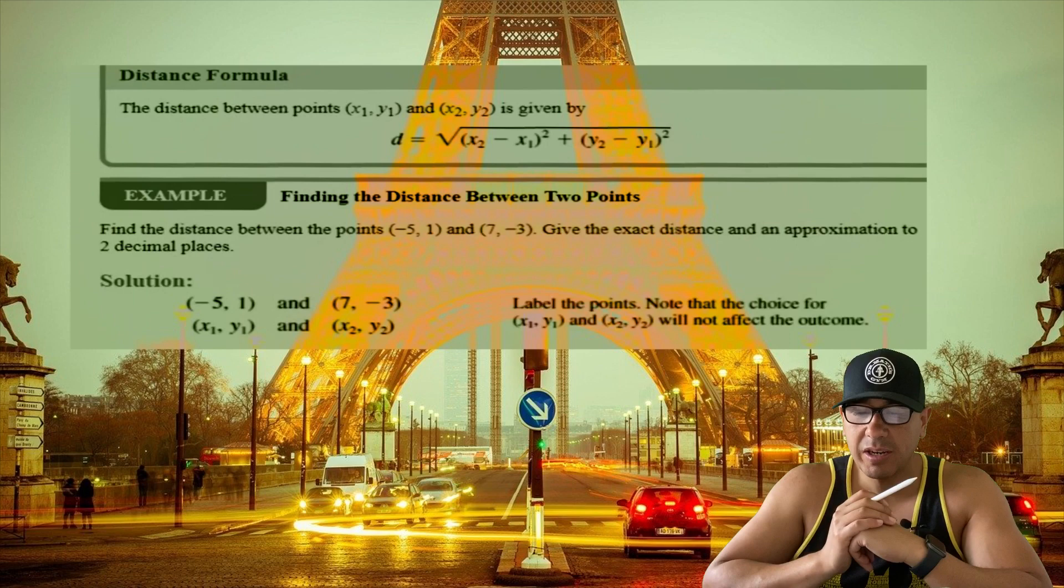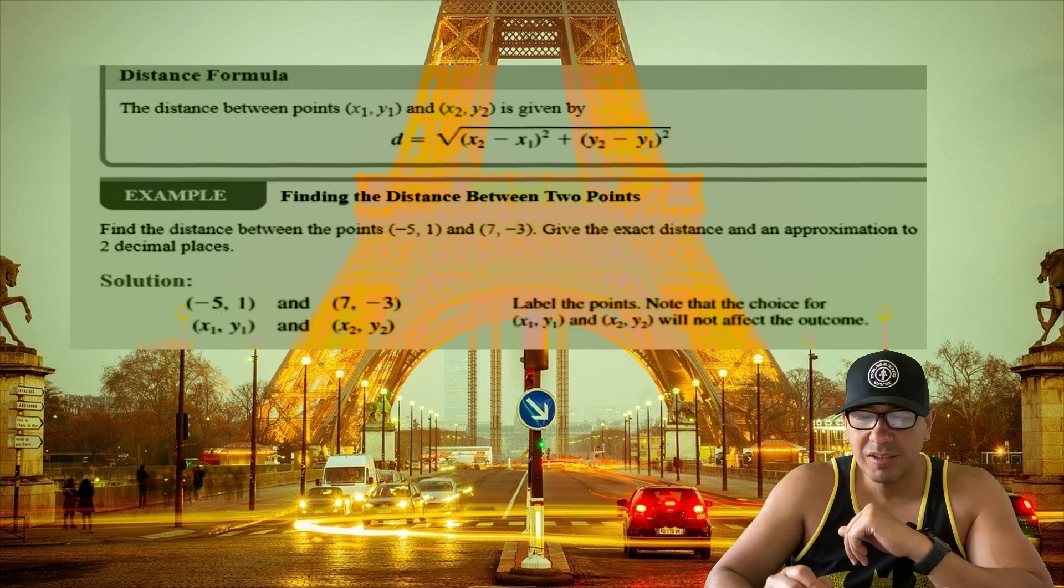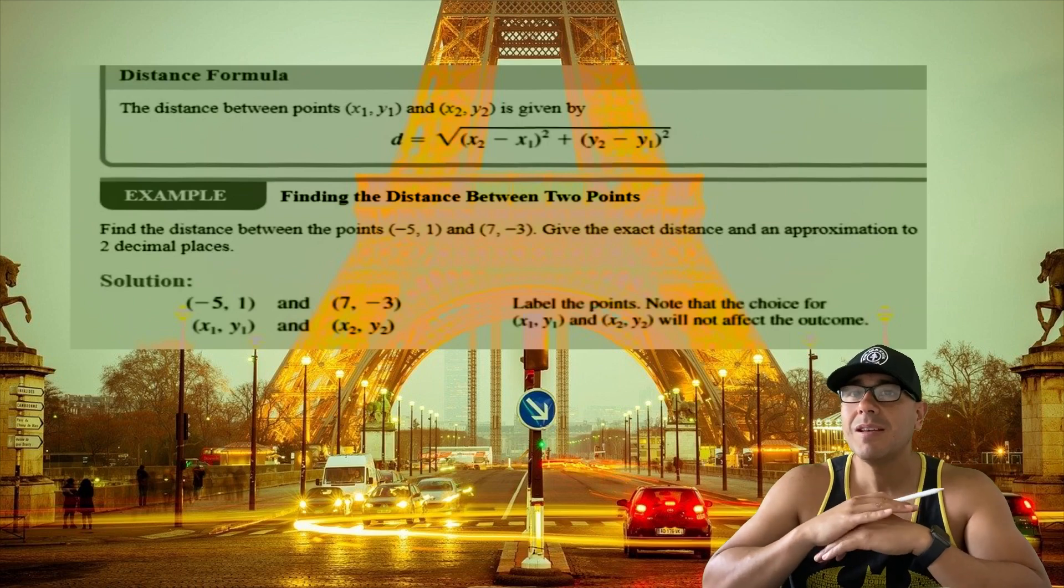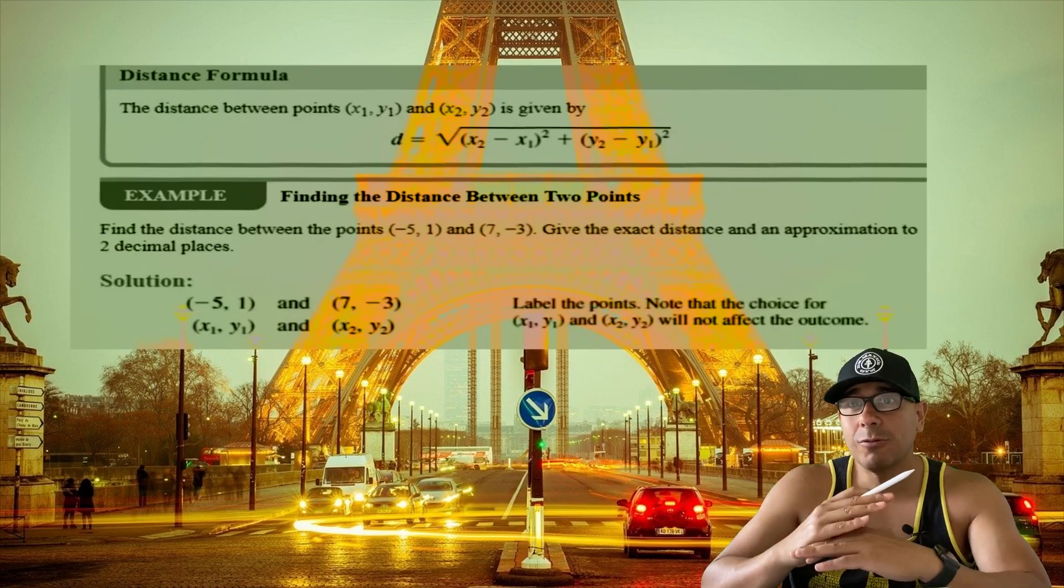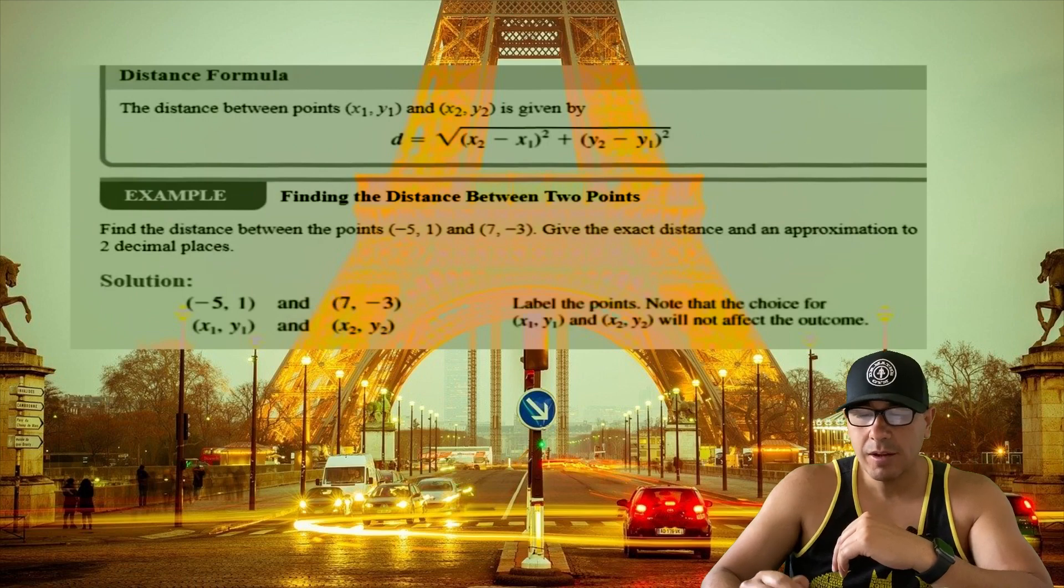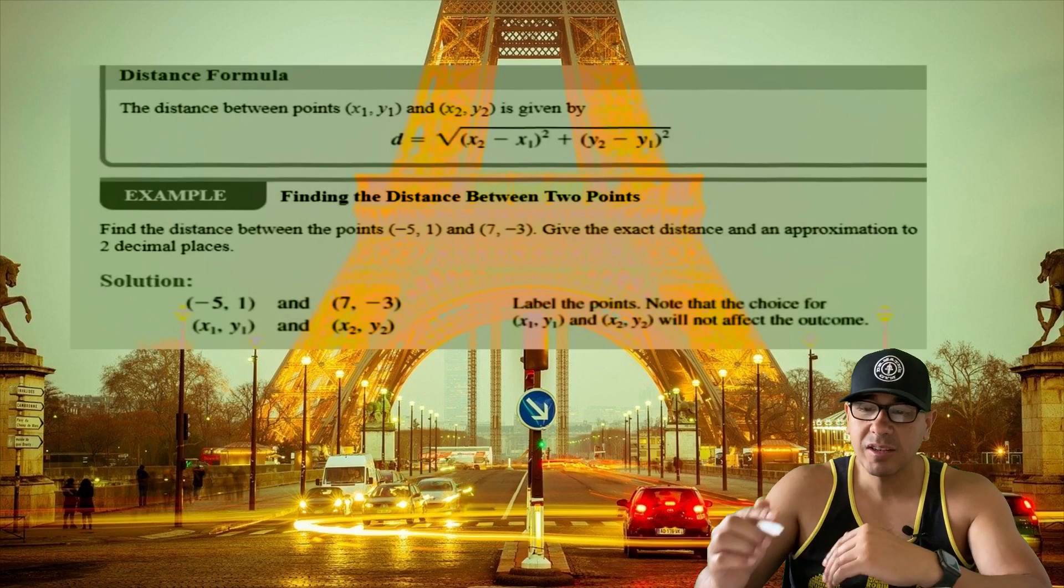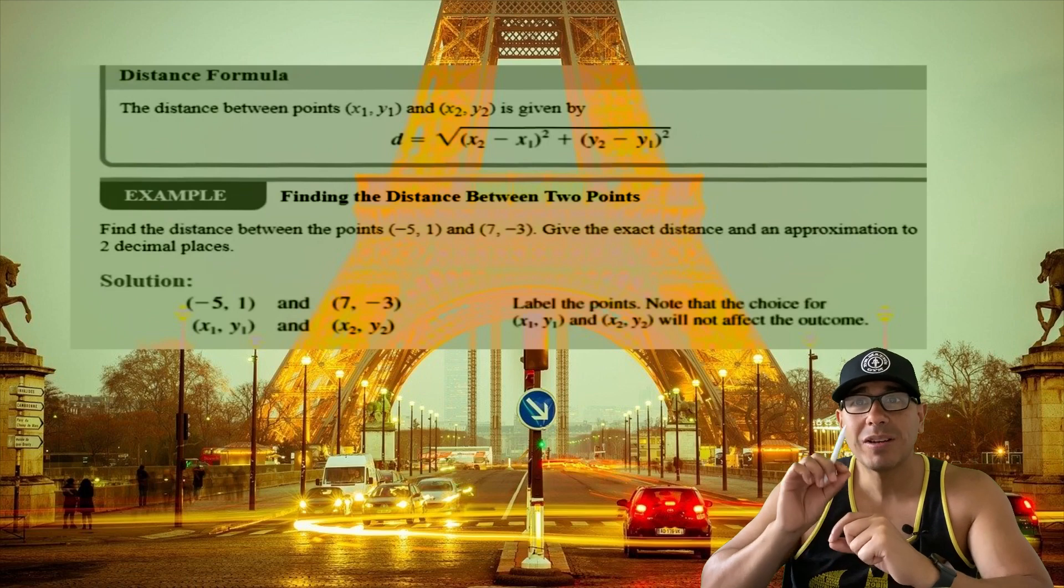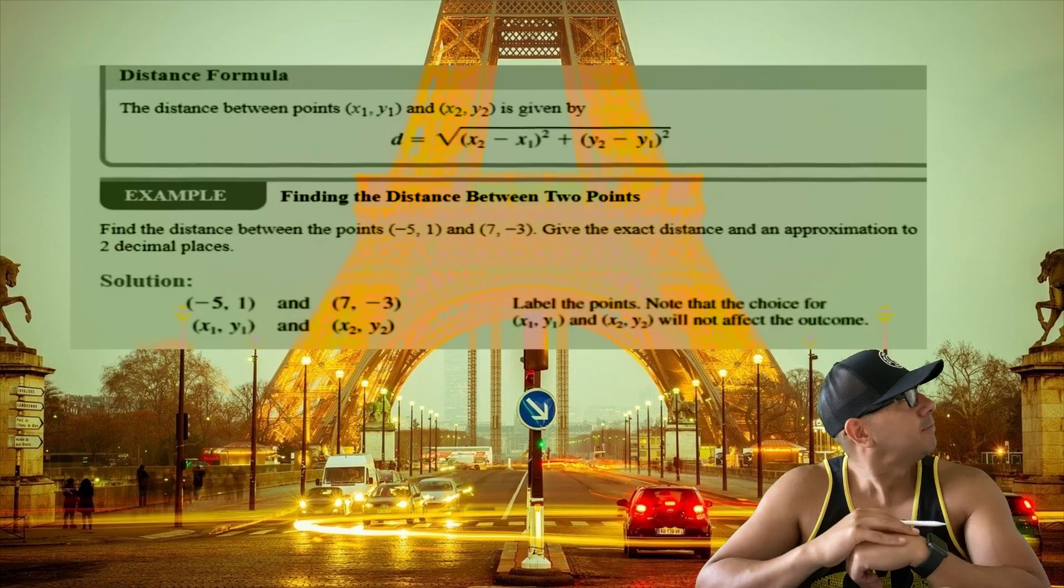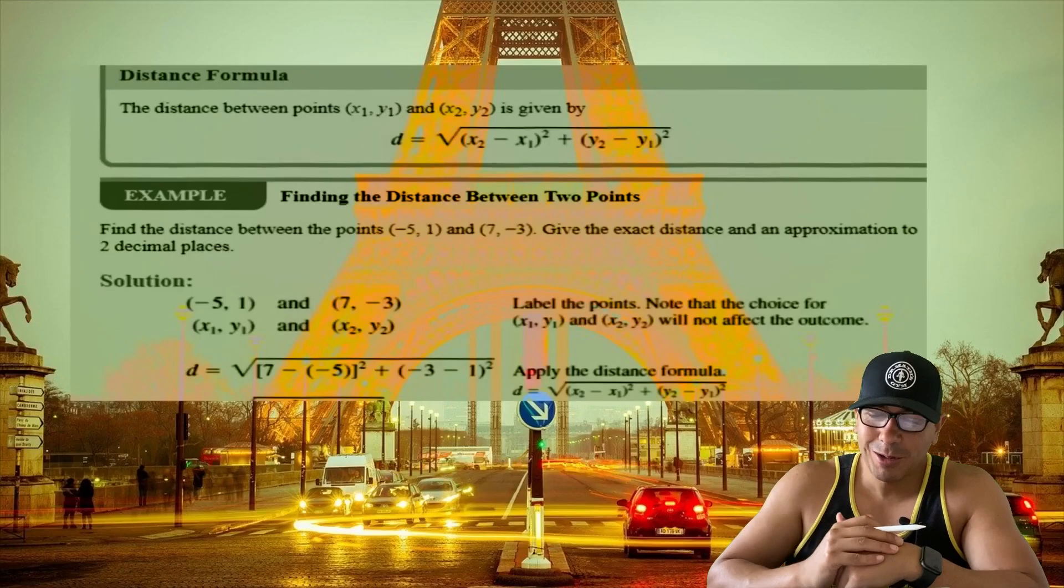Let's look at our solution. What I'm first going to do with these two points is label them. I always label my points because being successful in math is all about organization. I'll call this point (x₁, y₁) and this point (x₂, y₂). I'm going to make sure I label everything so that when I plug it into our formula, I know exactly where everything goes. It's like my mom always used to say, life is a box of chocolates—you never know what you're going to get.